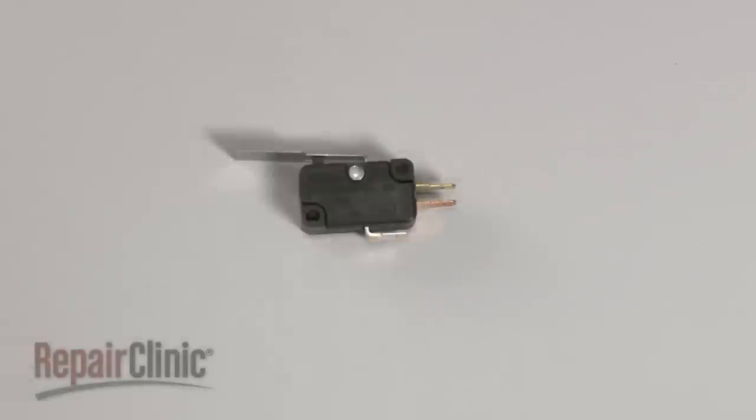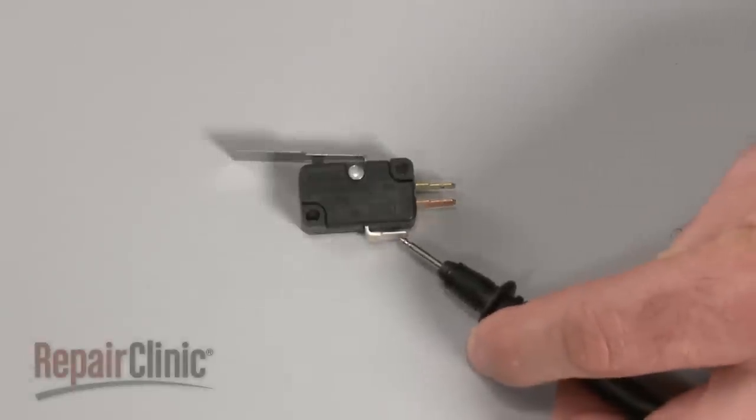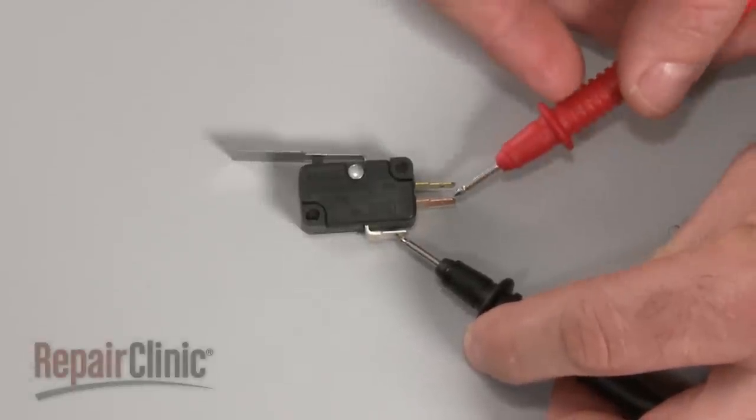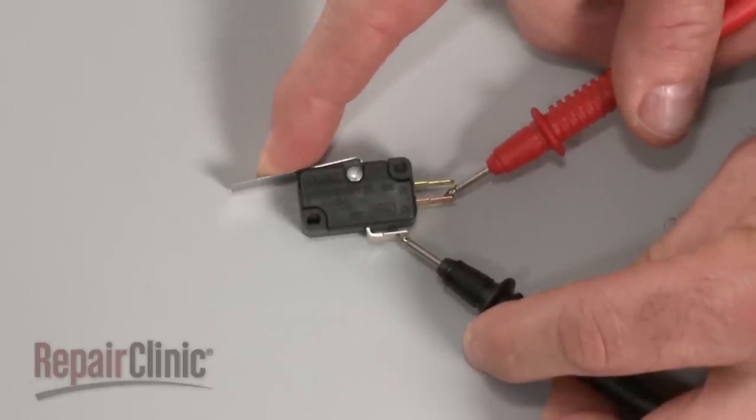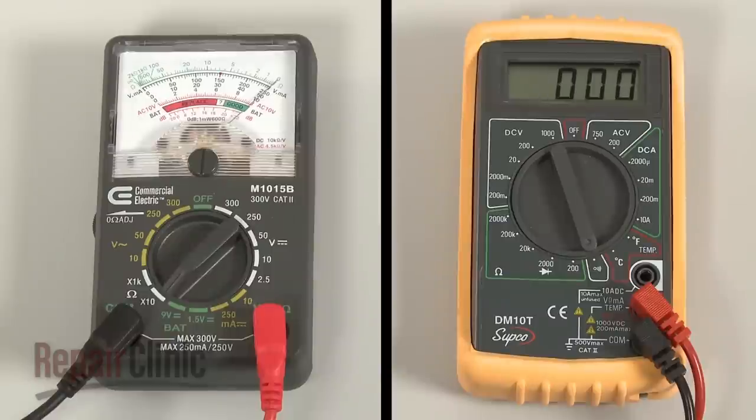To test the switch, use a probe to touch the common terminal, and the second probe to touch the normally open terminal. Now actuate the switch. If the meter reading shows zero ohms of resistance, the switch has continuity.